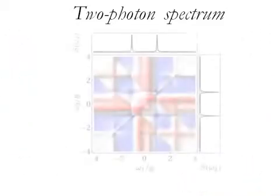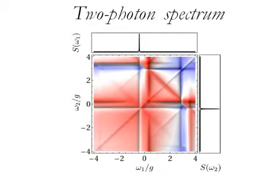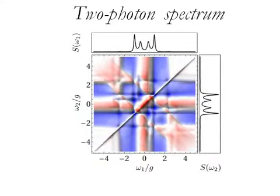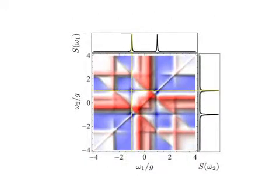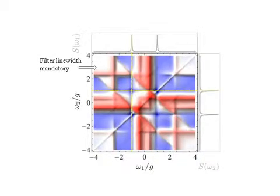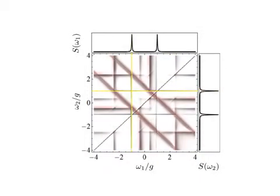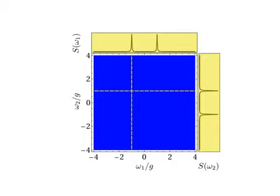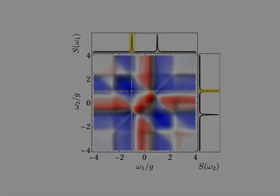There are countless configurations to revisit with this novel technique. For instance, this shows how the correlations remap when the quantum dot is detuned from the cavity, and this shows what happens when increasing the pumping rate. While a perfect detector resolution can be assumed for single-photon spectra, the filter's linewidth is an integral part of frequency-resolved photon counting. Two narrow filters give trivial results, while broad ones blur the features as shown here. In the limit of very broad filters, the conventional result of Hanbury Brown and Twiss is recovered. The study of all the other frequency ranges is just at its beginning.